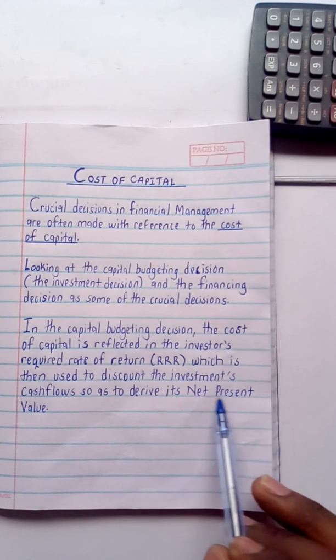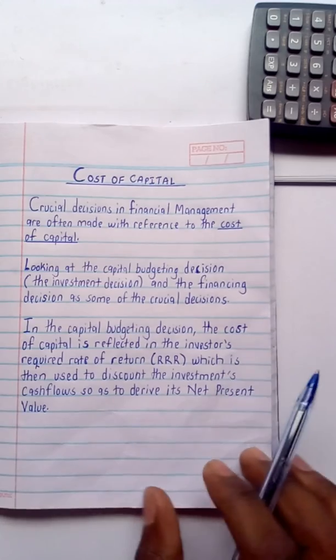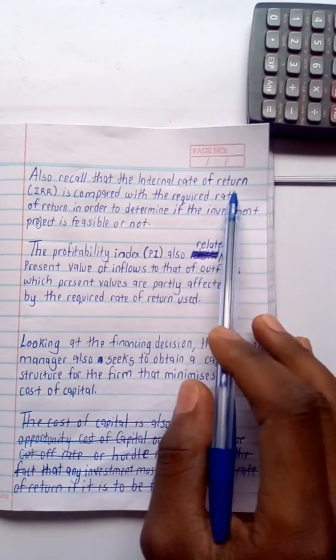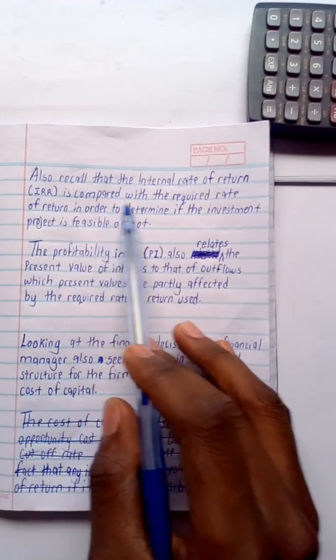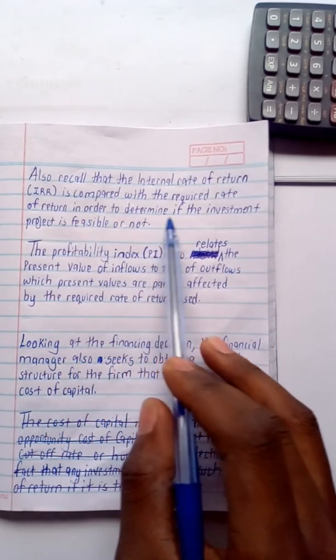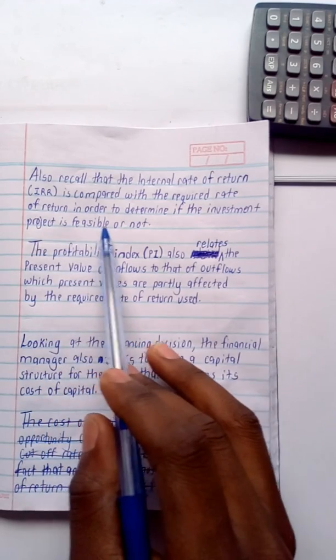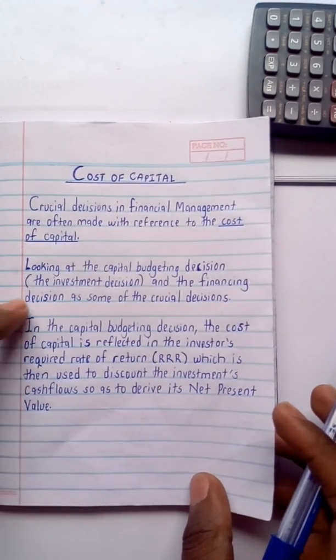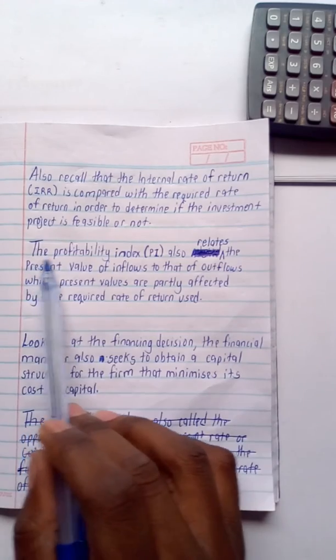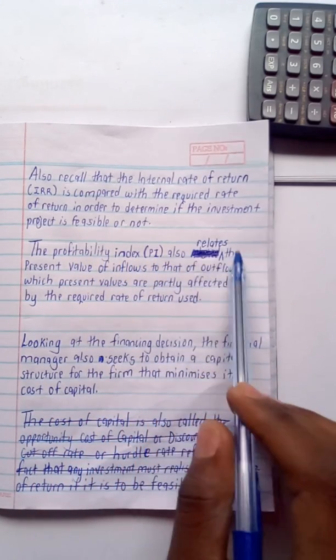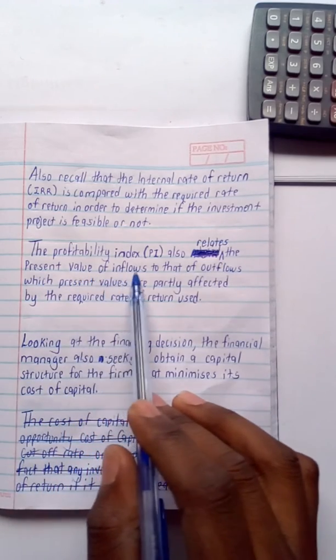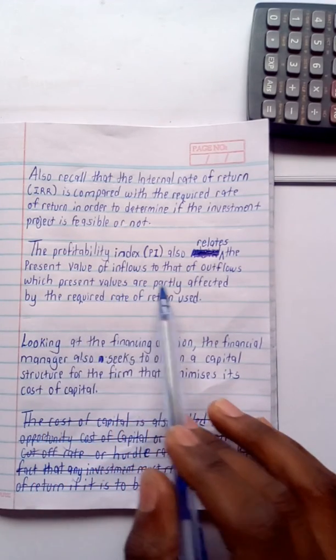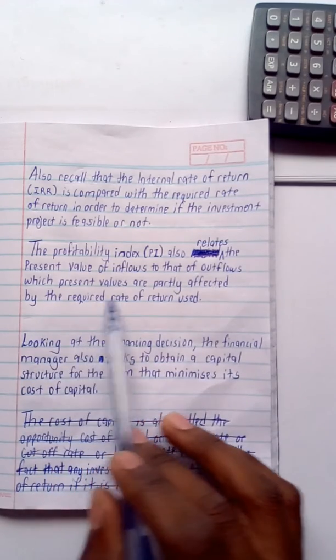Also recall that the internal rate of return (IRR) is compared with the required rate of return in order to determine if the investment project is feasible or not. Still under the investment decision, the profitability index (PI) also reflects the present value of inflows to that of outflows, which present values are partly affected by the required rate of return.